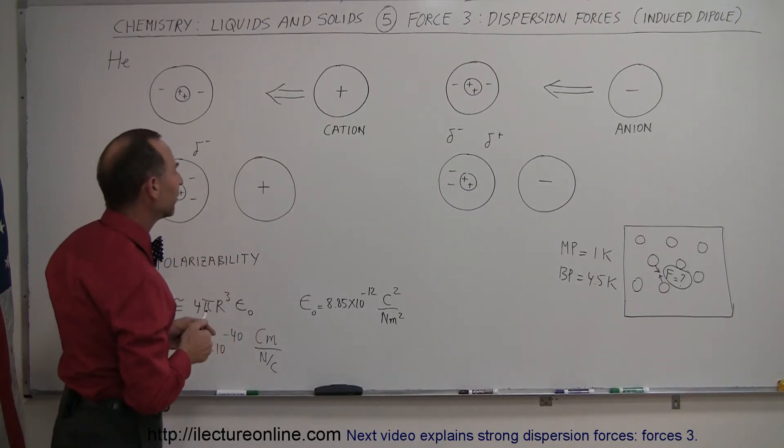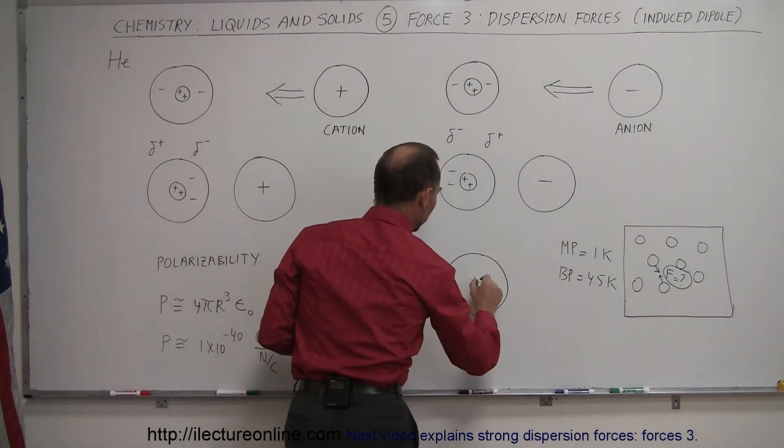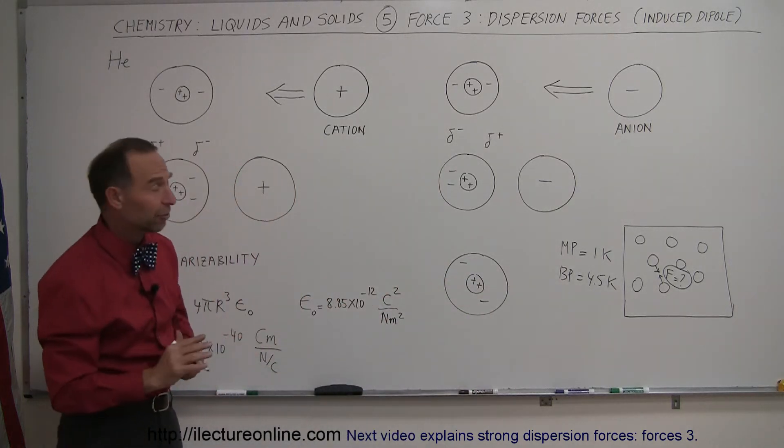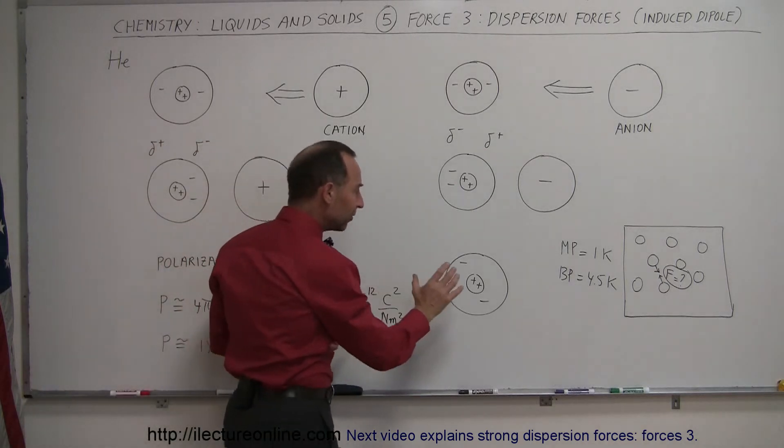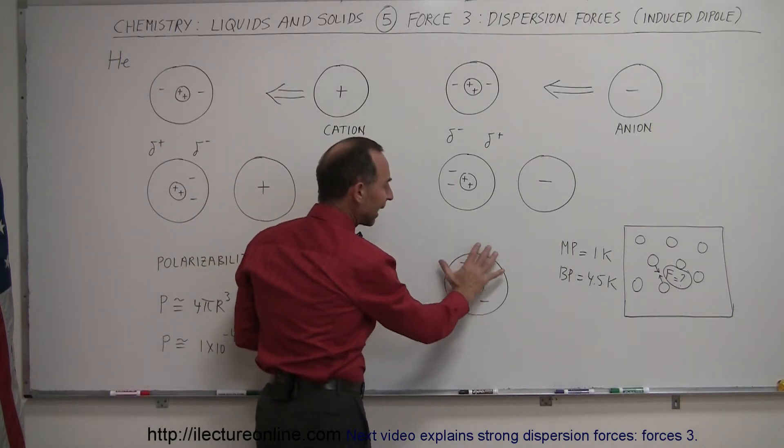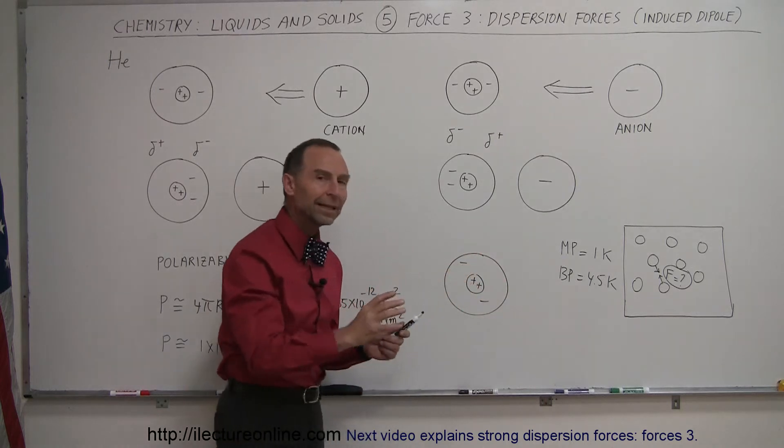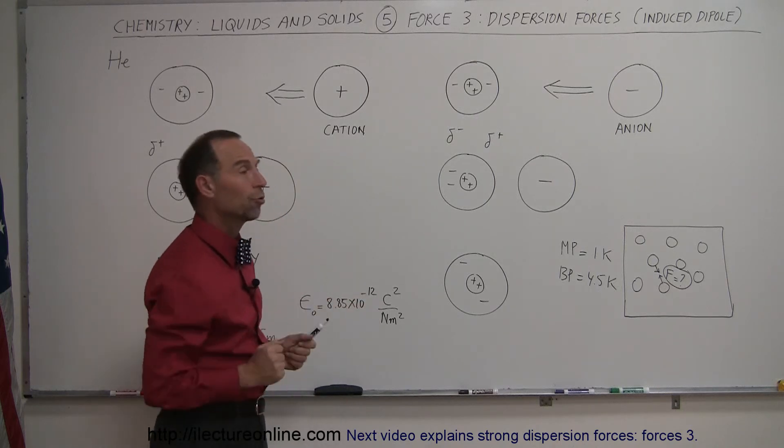Here's a helium atom. It has a nucleus with two positive charges in it, and it has two electrons. Now, those two electrons whirl around the nucleus at very high speeds, many trillions of times per second, and because of that, they don't always cancel each other out, so at all times, this atom is not completely symmetrically balanced as far as the electric charge distribution is concerned.